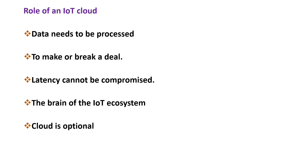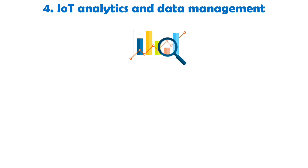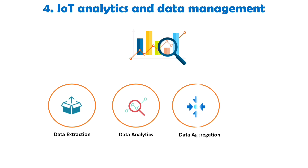Alternatively, edge computing or fog computing can also be considered for local processing. Edge computing is preferred when there is a need for extensive data processing and storage on-site, closer to the source of data generation. The choice between utilizing the IoT cloud or opting for local processing depends on the specific requirements of the application, considering factors such as performance, scalability, cost, and data processing needs. Let's explore the fourth component of IoT, which is IoT analytics and data management. This component is primarily focused on various data operations including data extraction, data analytics, data aggregation, and data classification.